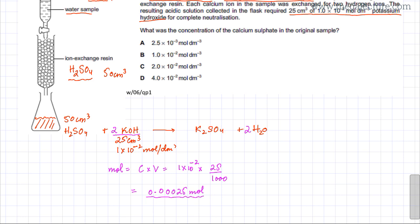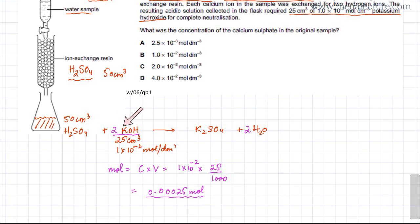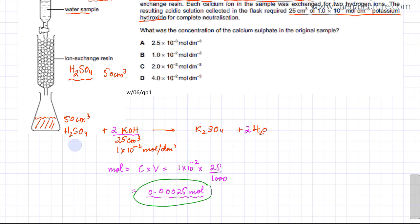From the balanced equation, the ratio of KOH to H₂SO₄ is 2:1, so 2 moles of KOH react with 1 mole of H₂SO₄. Therefore, the moles of H₂SO₄ are half the moles of KOH: 0.0025 ÷ 2 = 0.00125 moles of H₂SO₄.